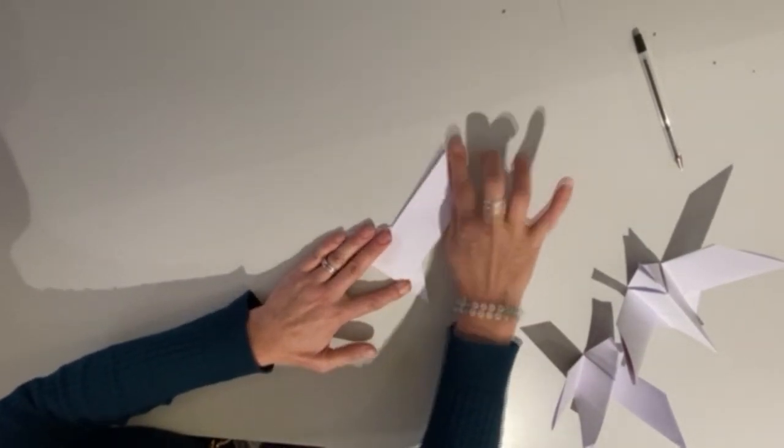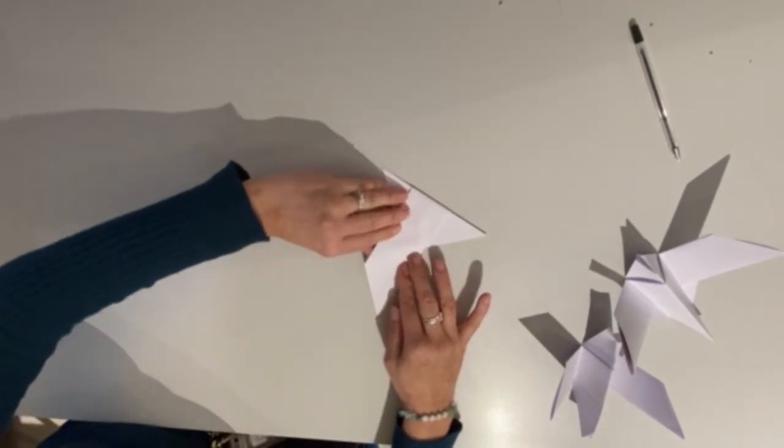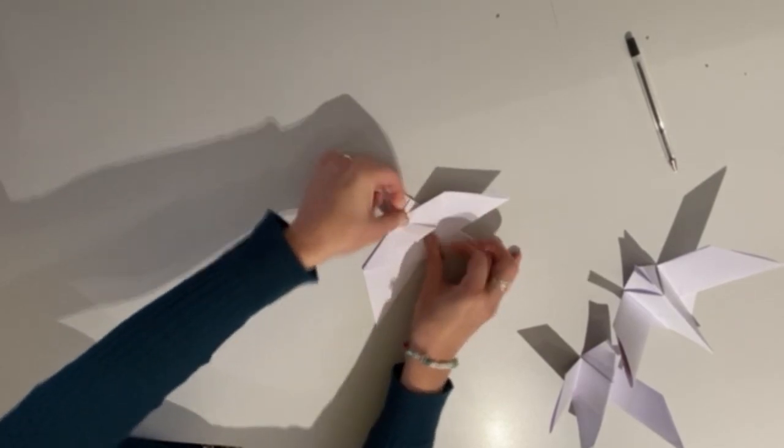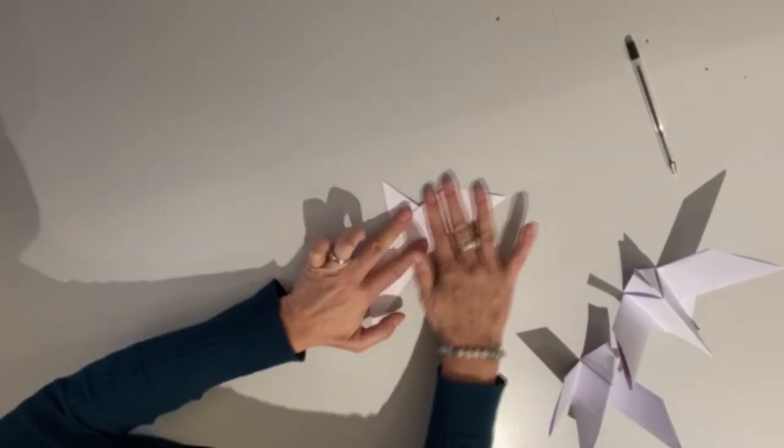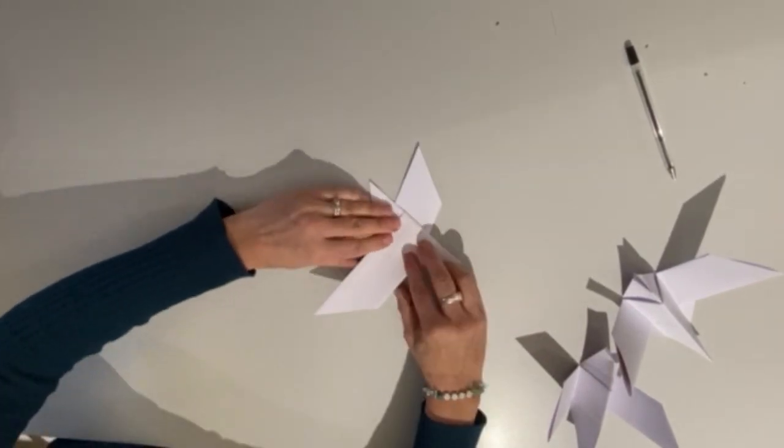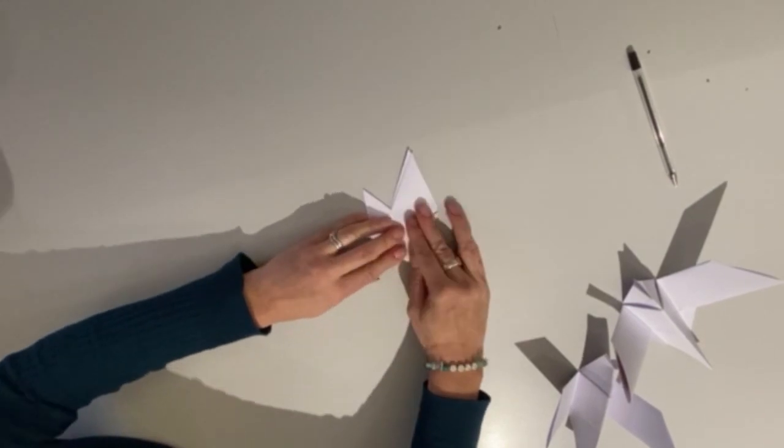Flatten it all out, make sure all your creases are nice and sharp. I'm now going to turn that around and I'm going to fold my wings back. And I'm going to turn that upside down and do the same on the other side, and I can just match that to the one underneath.